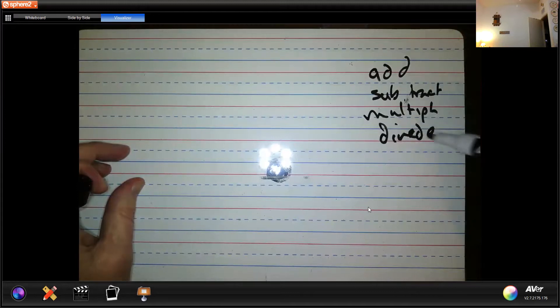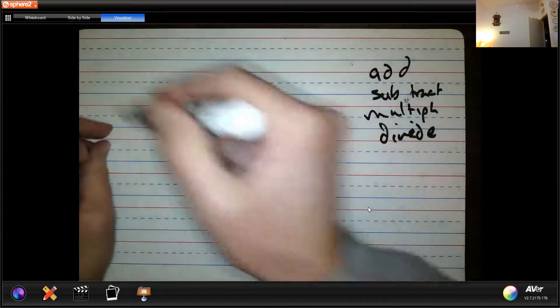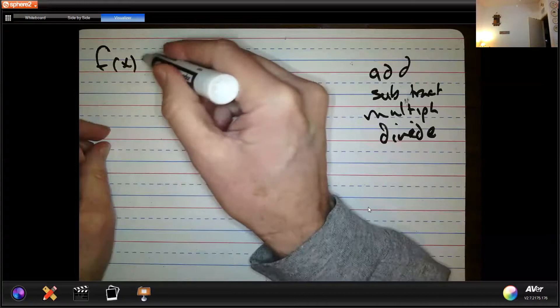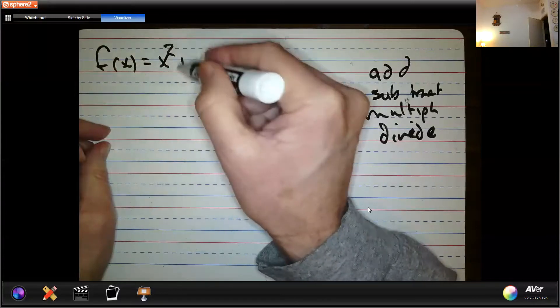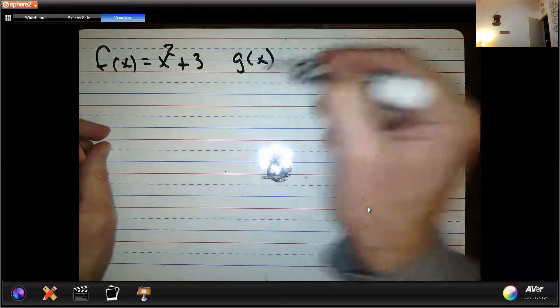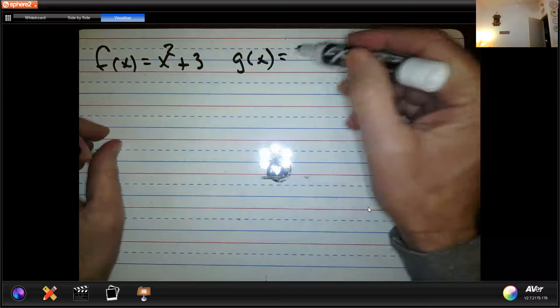So what do I mean do it with functions? Well, if I had something like this, f of x was x squared plus three, and g of x was, let's say, 2x minus 5.